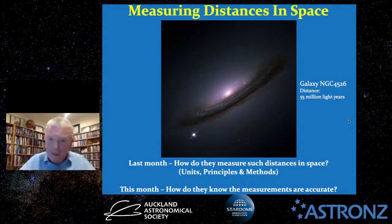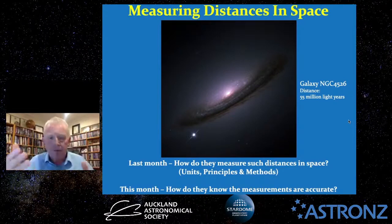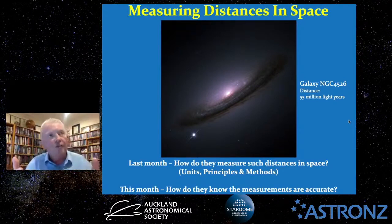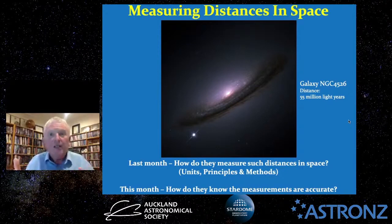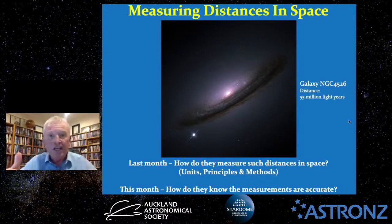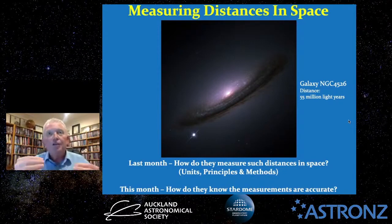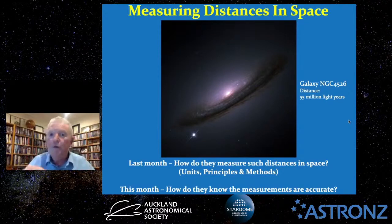We had a good discussion and answered that question with various principles and methods. We talked about the concept of light years — a light year being the distance that light travels in a year, which is 10 million million kilometres. We also introduced the concept of a parsec, which is 3.26 light years.